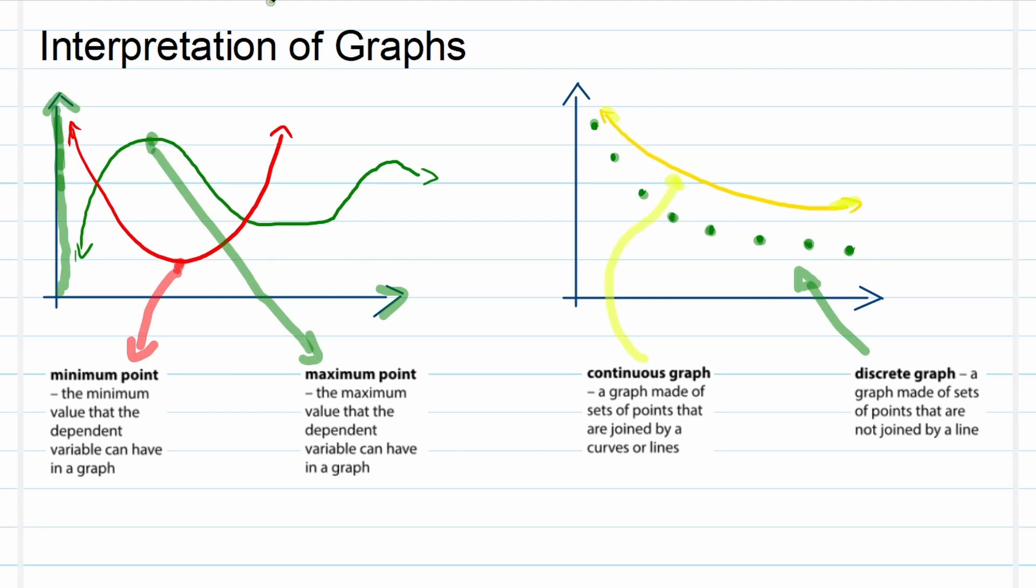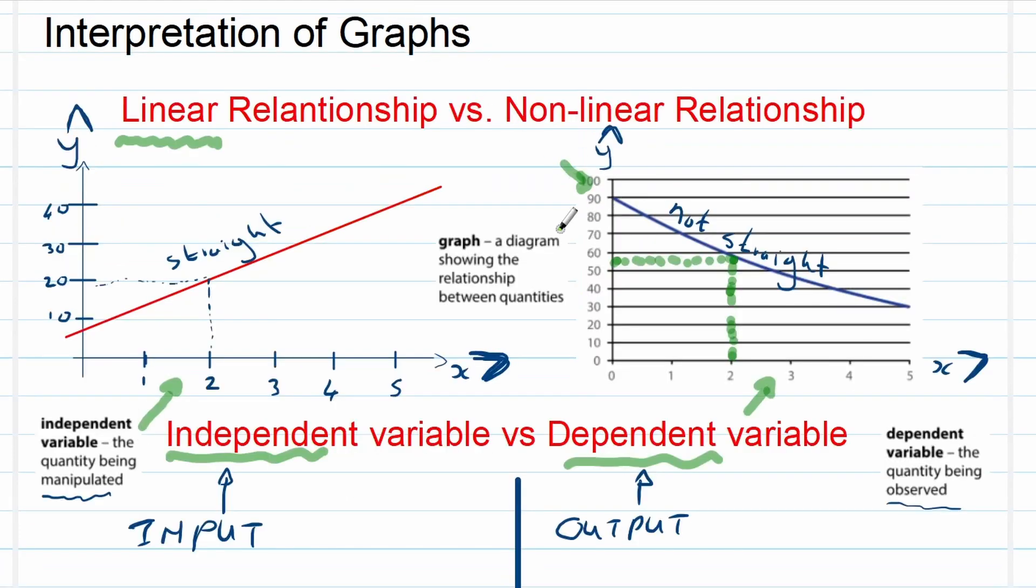So here we go, these are the basic terminologies for graphs. Remember, a graph is a visual representation that shows the relationship between quantities. It is a visual, something that you see. So that will help you to remember it as well. Stay tuned for the next video on graphs.